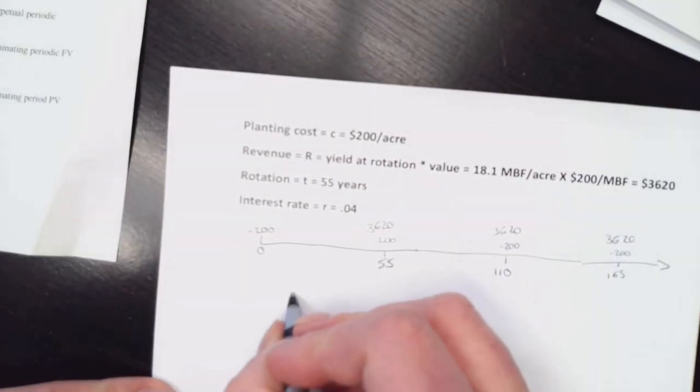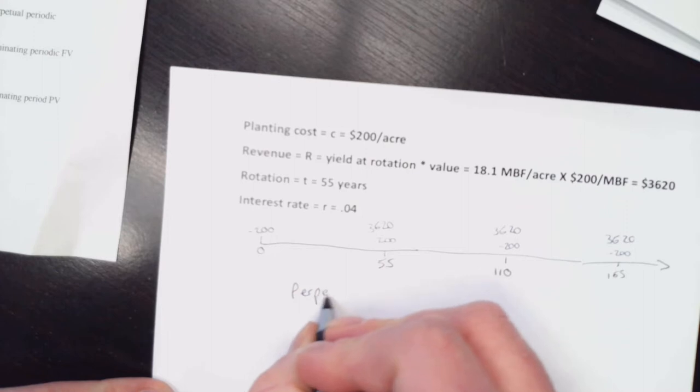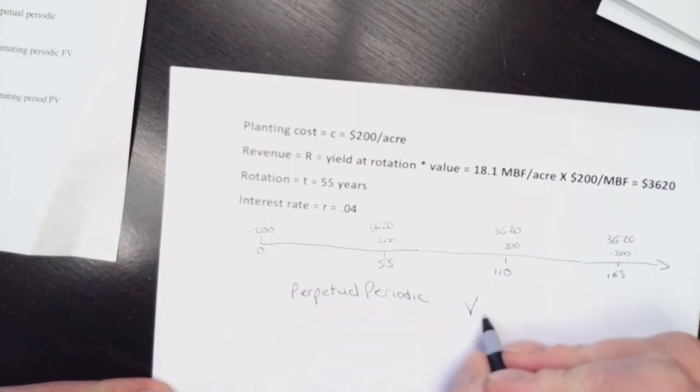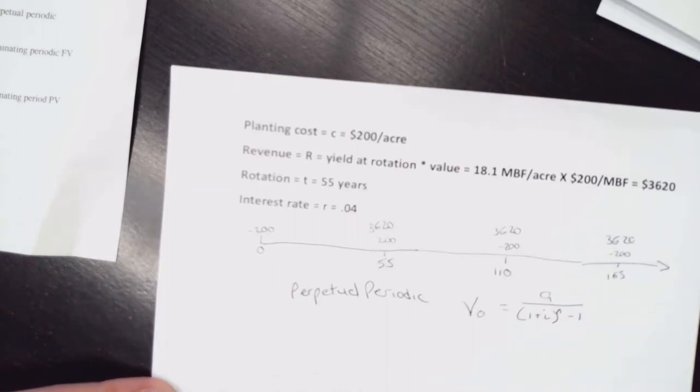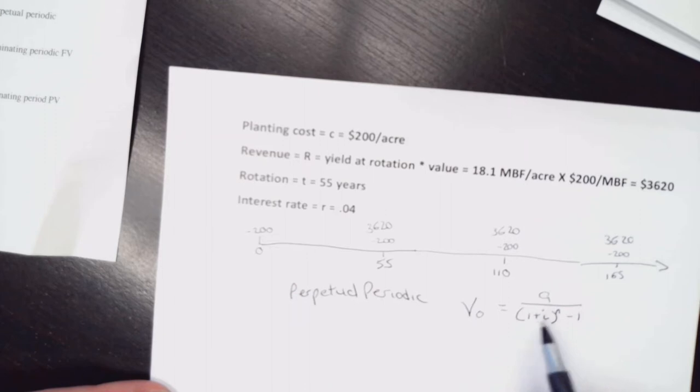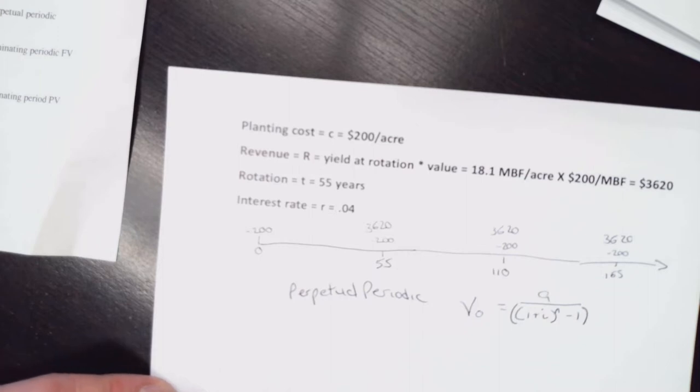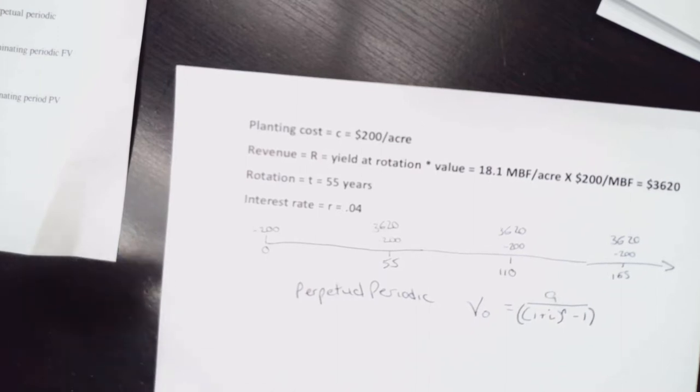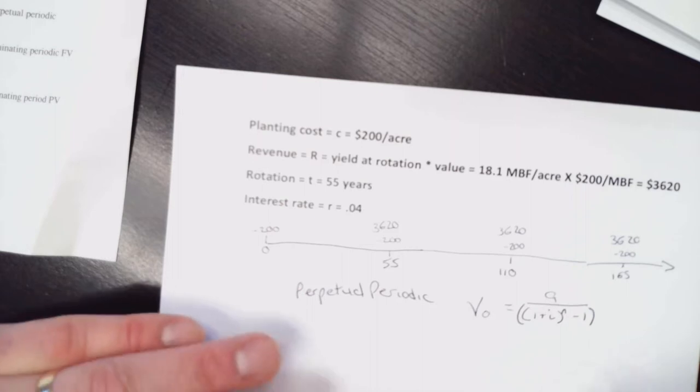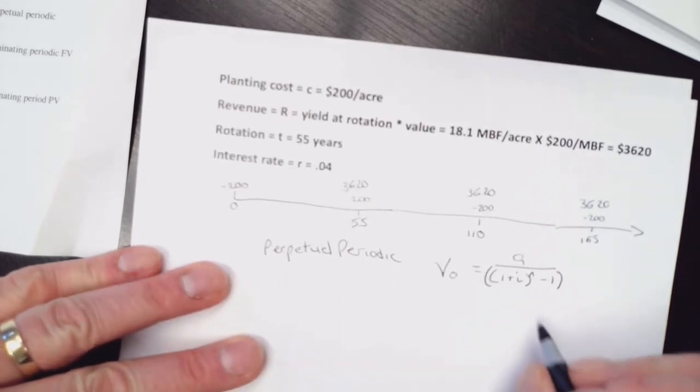So I can write that down. I can write perpetual periodic, and I can say what the equation is. V0 equals A over 1 plus i to the n minus 1. We talked about this in class. If you just plug that into either your calculator or your spreadsheet, it's going to fail. So we want to have an extra set of brackets out there just to recognize how we're going to plug it in as well.